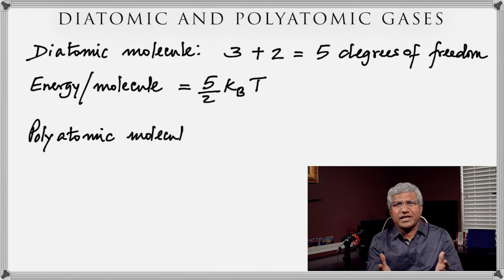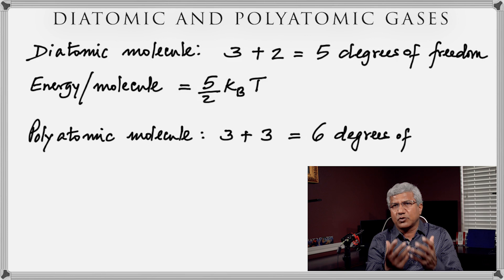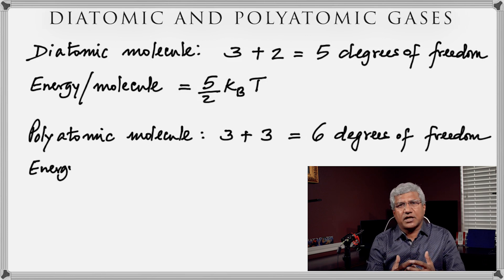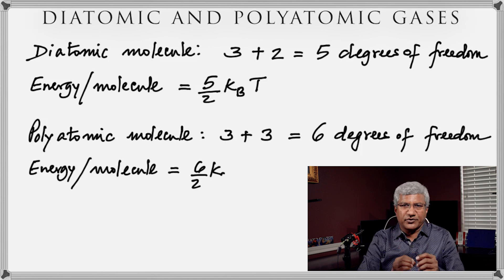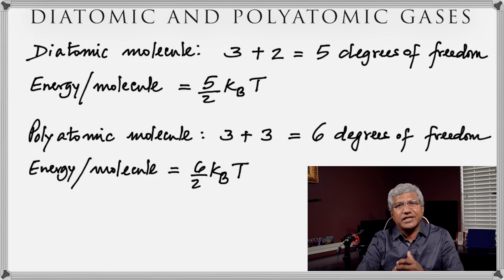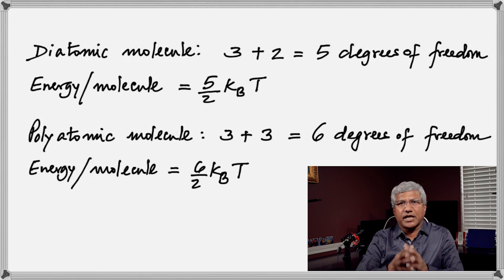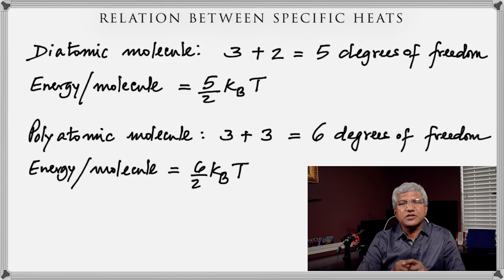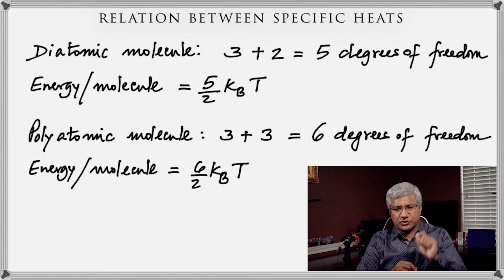For triatomic or polyatomic molecules — like carbon dioxide and methane — you get 6 degrees of freedom: 3 translational and 3 rotational. Therefore the energy per molecule is 6/2 kBT = 3kBT. Remember, each of these formulas is written for one molecule; to get the energy per mole, multiply by the Avogadro number.